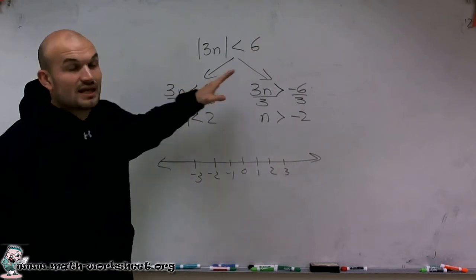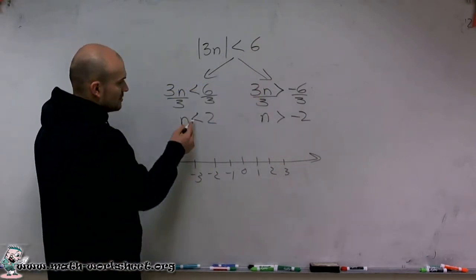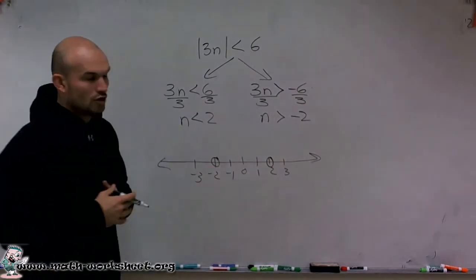Now, since I'm dealing with just a less than and greater than symbol, I know that I'm going to be using an open circle. So n is less than 2, so I'm going to go over to 2. And then n is greater than negative 2, which would be another open circle.